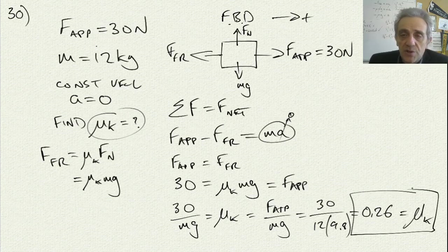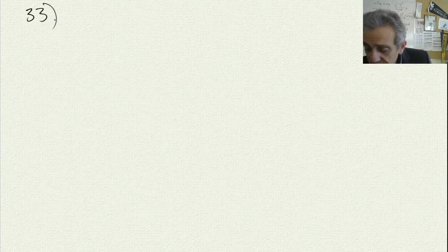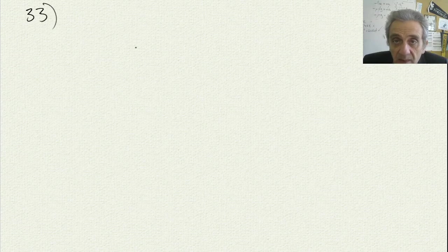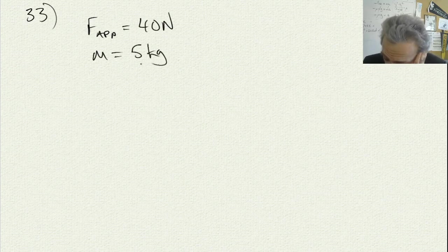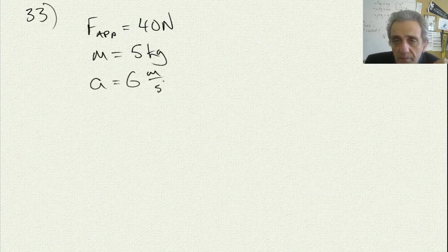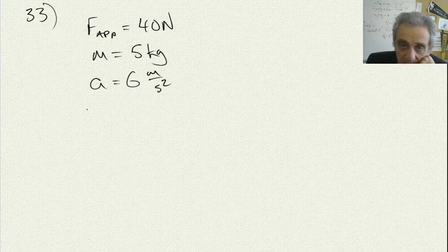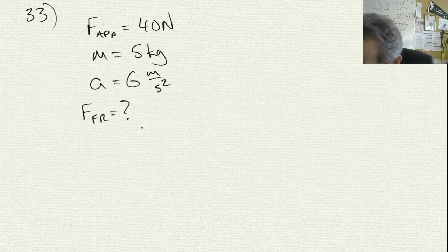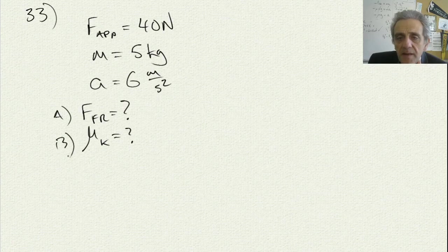So that was question number 30. The next question states: a force of 40 newtons accelerates a 5 kilogram block. So the applied force equals 40 and the mass equals 5 kilograms. The acceleration is 6 meters per second squared along a horizontal surface. Part A asks how large is the friction force, and part B asks what is the coefficient of friction, μk.